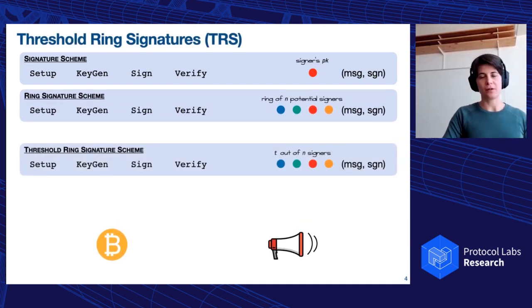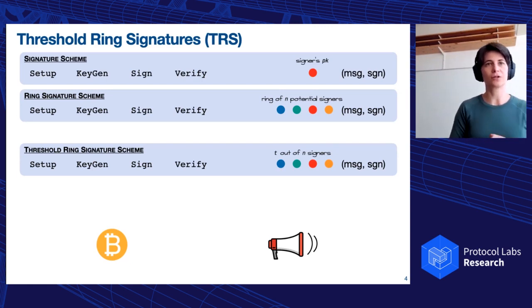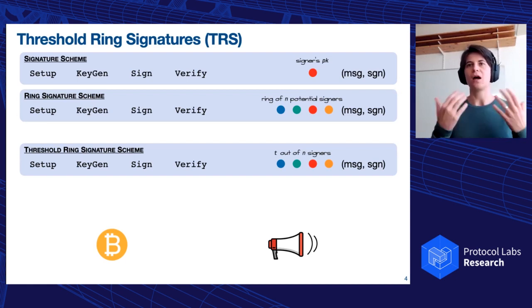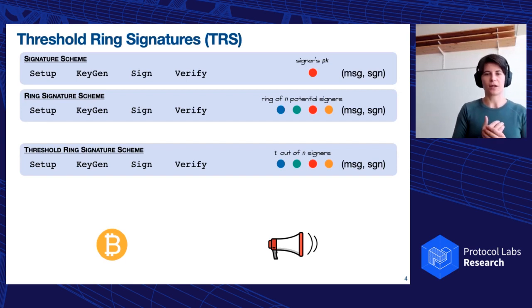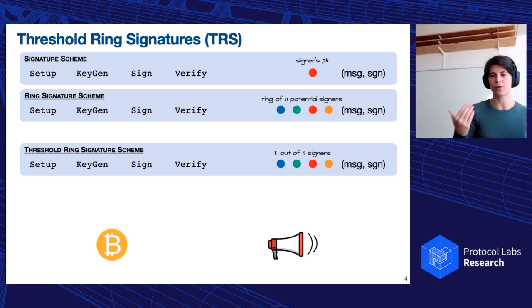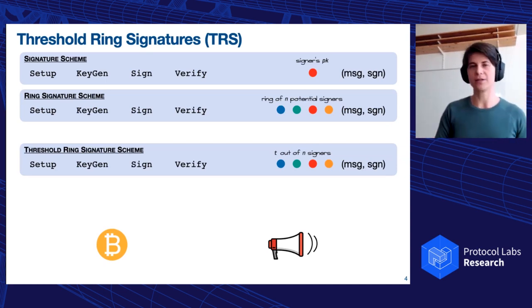A couple of years later, in actually the next year in 2002 crypto, there has been the first scheme of threshold ring signature proposed in the literature. Again, the algorithms are exactly the same, except that now instead of having one potential signer out of N public keys, we have T people that sign out of N possible signers. And this is, again, very important in, for instance, whistleblowing, or if I want to have some threshold cryptography, even in Bitcoin. Maybe I want to have two-factor authentication to sign two devices that sign the same transaction, but I don't want people to know exactly which combination of two devices I'm using.